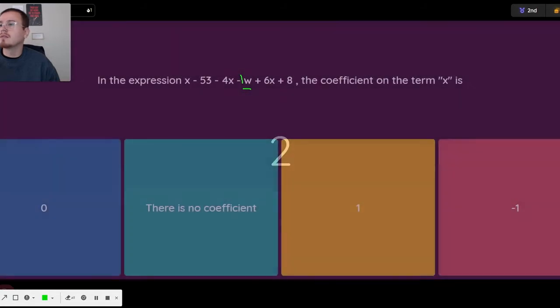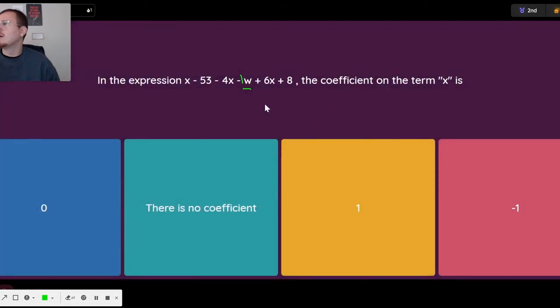The coefficient on the X term - so find the X term. Well there's two X terms but I think they're trying to be pretty obvious that it's really this one, not the negative 4x. What number is there? There isn't one, so you might think there's zero or there is none. You don't see a negative sign so it's not negative one, it's going to be positive one.